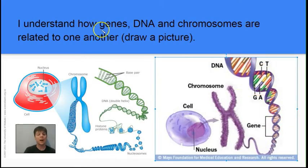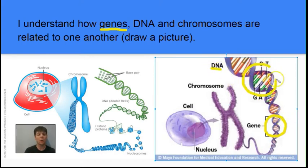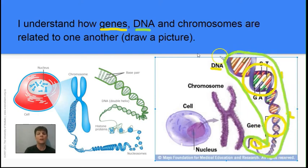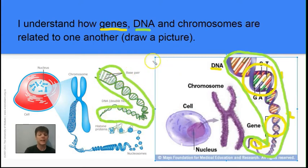Our next learning target is to understand the relationship of genes, DNA, and chromosomes. A gene is just a small region of a DNA molecule, and a gene is going to be transcribed to produce RNA. You can see on this DNA molecule in purple, I've circled one gene here, a second gene here, and a third gene here. The DNA molecule is the double-stranded double helix molecule we see in purple, and the same type of image appears in green — again, that's a DNA molecule.